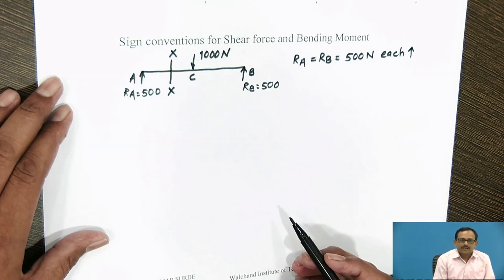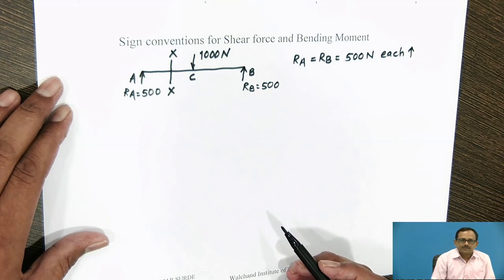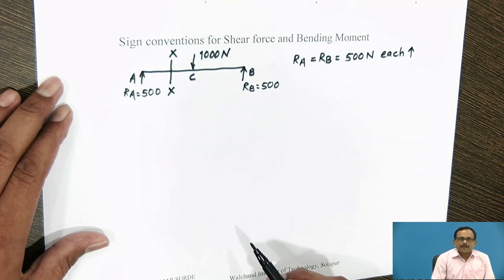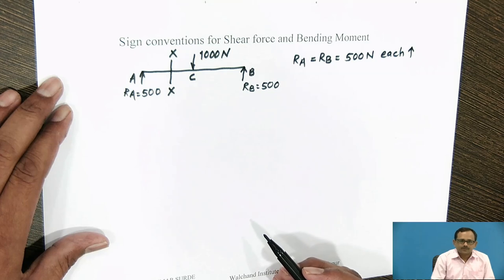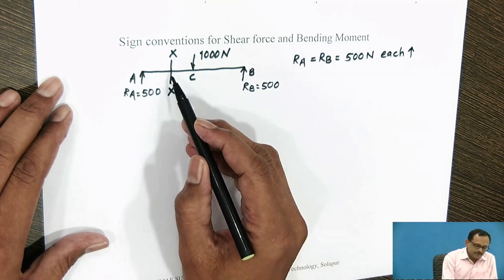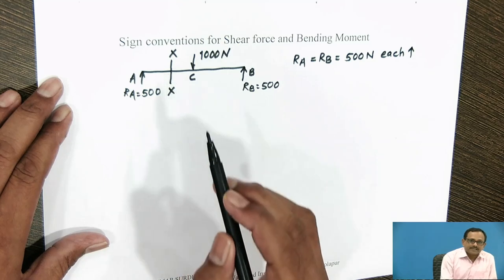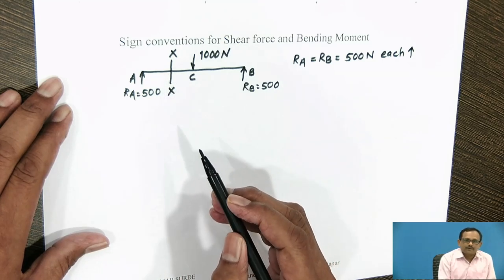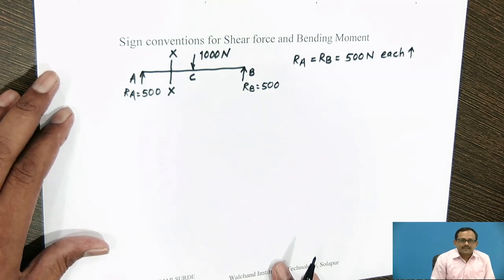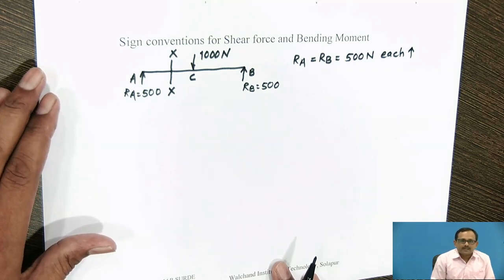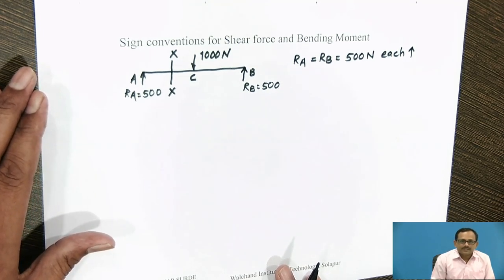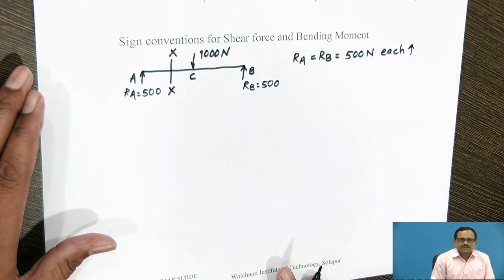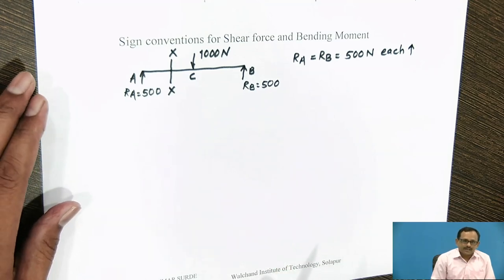Think for a while — what do you mean by Shear Force and Bending Moment? Shear Force at section XX is defined as the algebraic sum of the forces and reactions acting to the left side of the section or to the right side of the section.